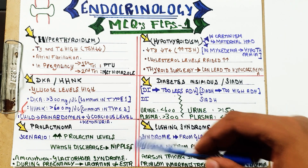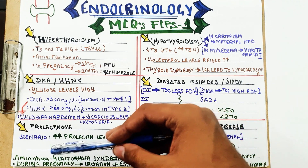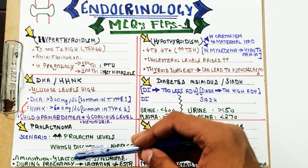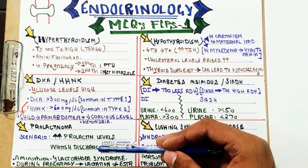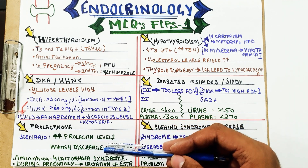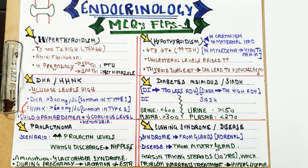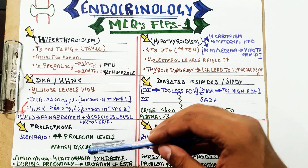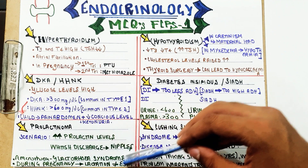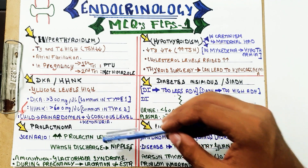A further complication is amenorrhea-galactorrhea syndrome. When prolactin levels are high, they inhibit FSH and LH. When FSH and LH are inhibited, ovulation will not happen, causing irregular menstrual cycles. A combination of nipple discharge, irregular menstrual cycles, and lack of ovulation leads to the diagnosis of amenorrhea-galactorrhea syndrome, which is due to prolactinoma.